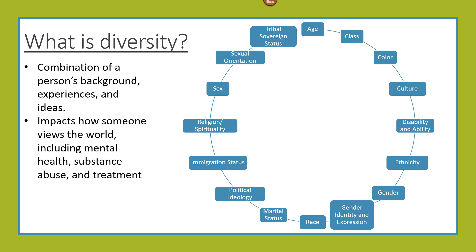Diversity is also any traits you may use to describe someone. For example, my friend is a biracial, 28-year-old married Catholic male born and raised in Puerto Rico who moved to Dallas to attend college. Most people have numerous characteristics that make up their unique self. These may be visible, invisible, or even just self-defined.